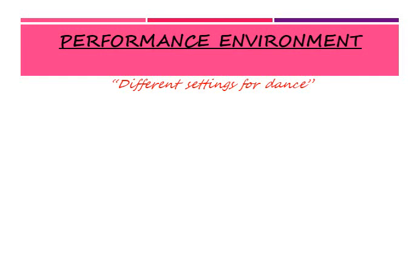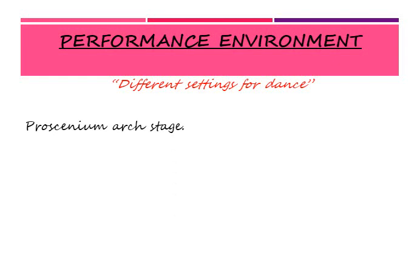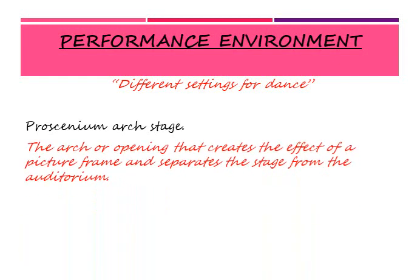Next is the performance environment — the different settings for the dance. It's a proscenium arch stage, which is the arch or opening that creates the effect of a picture frame and separates the stage from the auditorium. The auditorium is where the audience is sitting, and the stage is kept separate — it was as if you were dancing inside a picture frame, so you only had a set space on that stage to be performing.